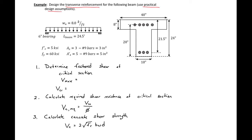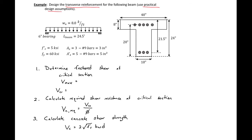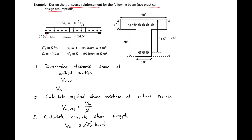We are given our beam length and loading and we assume we have already completed our flexural design. We have our given T-beam section, and our simply supported beam is resting on bearing pads. We have 6-inch bearing pads and we'll assume that our span length is center to center of the bearing pad. So our L span is going to be 24.5 feet minus 6 inches, which will be 24 feet.